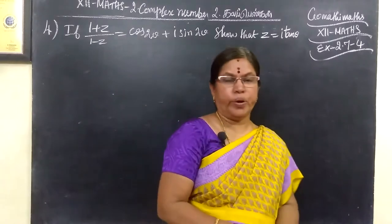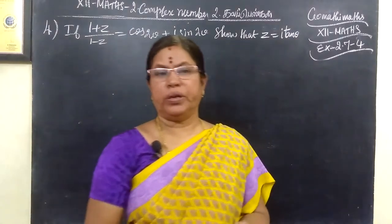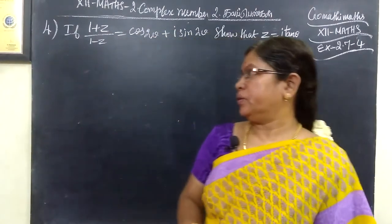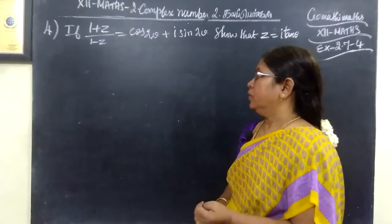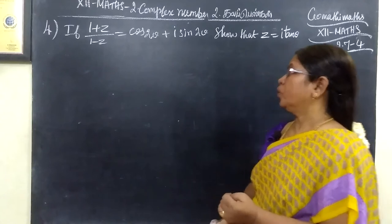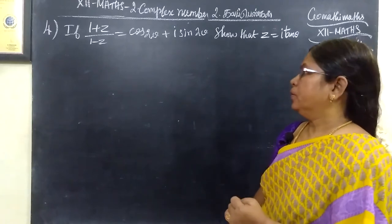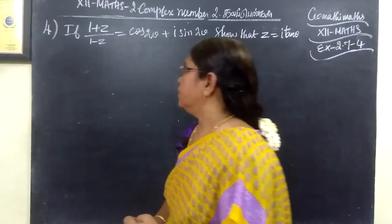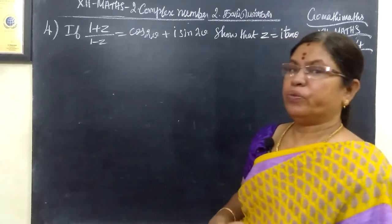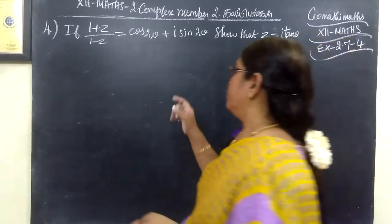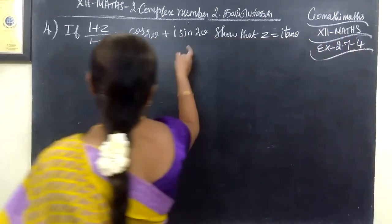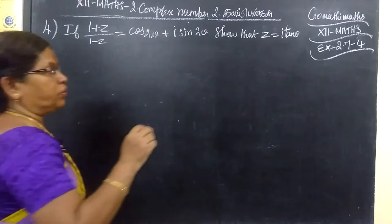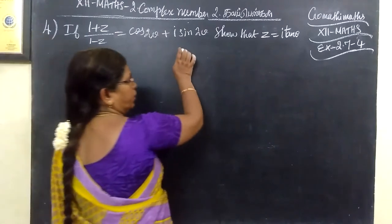Exercise 2.7, question number 4, 12th math, positive complex number chapter. If (1 + e^z) / (1 - e^z) equals cos 2θ plus i sin 2θ, show that e^z equals i tan θ.